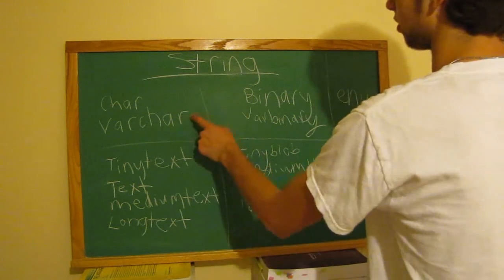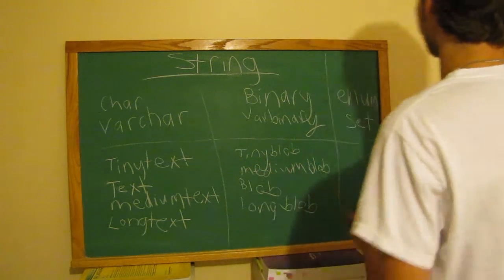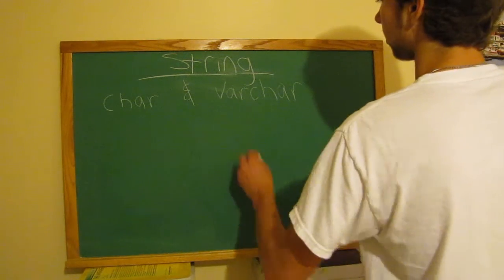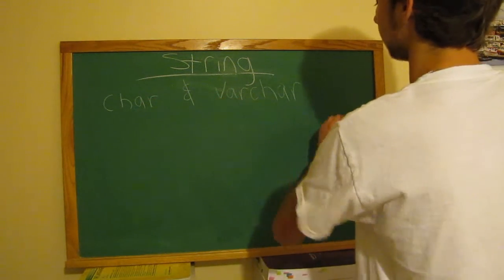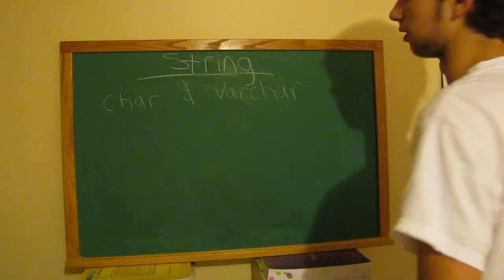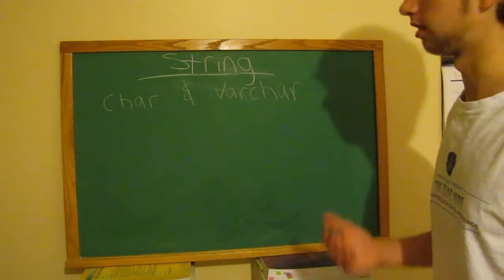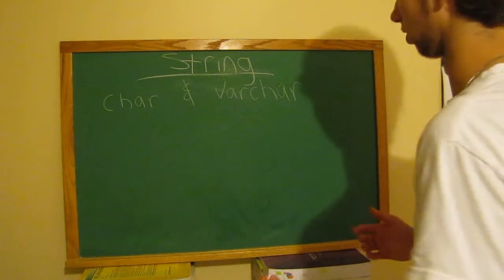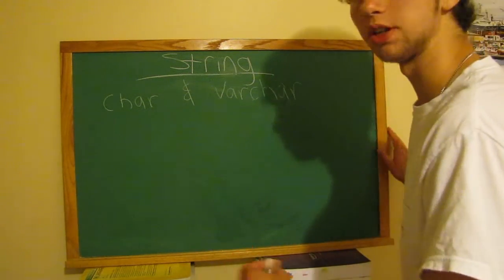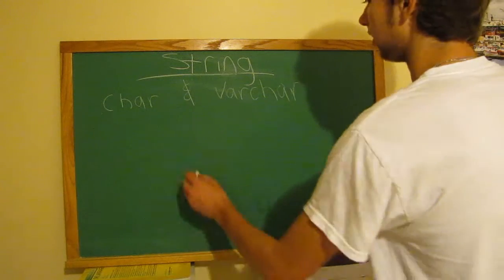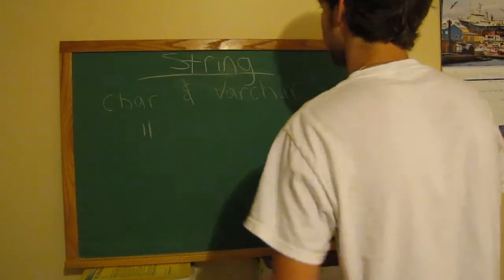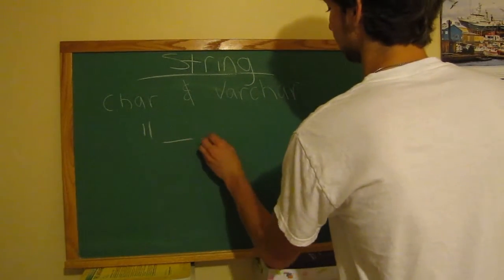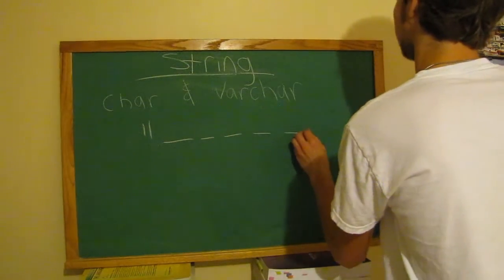First we'll be going over char and varchar. These stand for characters and variable characters. The difference between these two is how data is stored. So, if we put an entry into a database and it is 7 letters long...